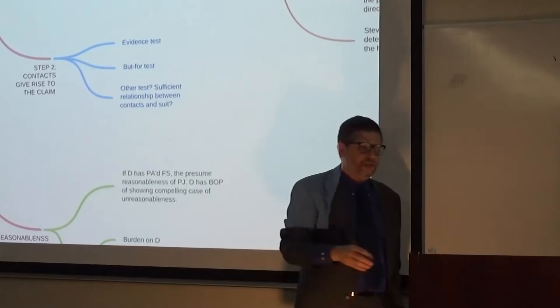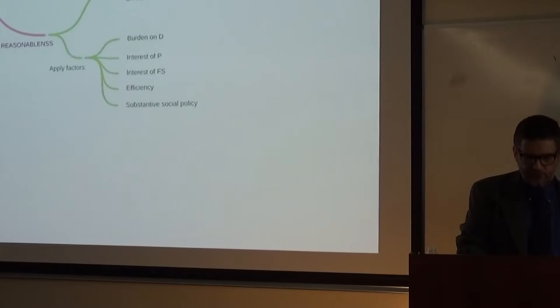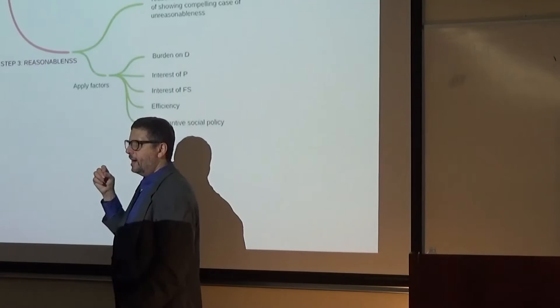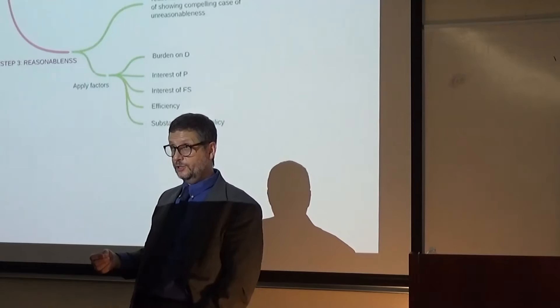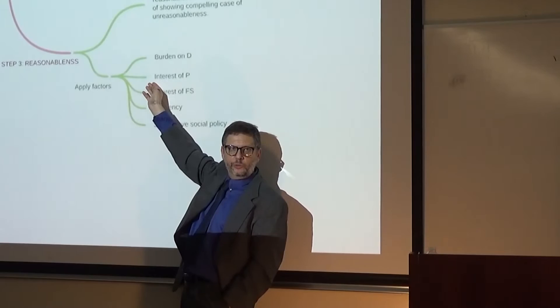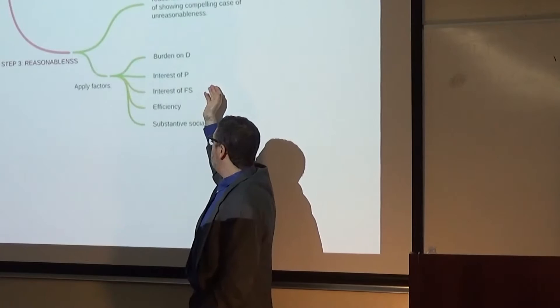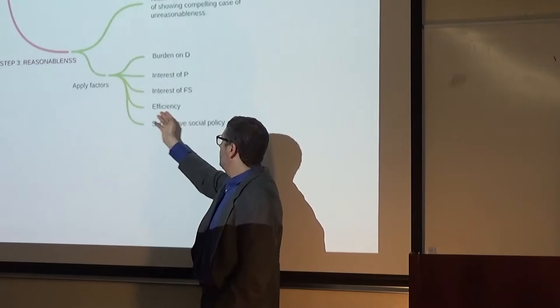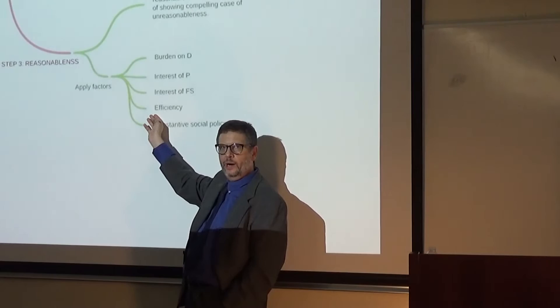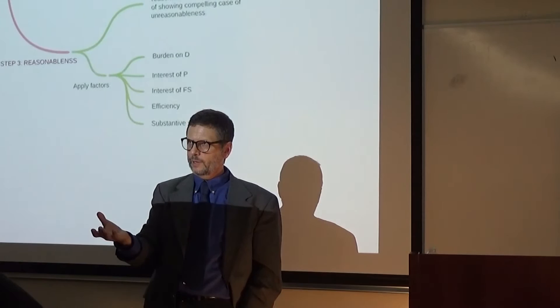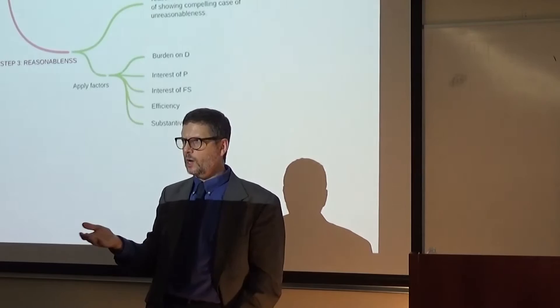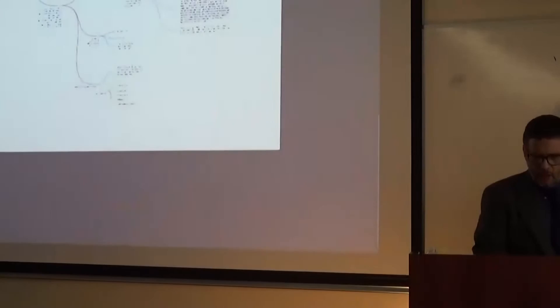Assuming you meet step one and step two, namely purposeful availment and the contacts gave rise to a claim, you go to the reasonableness factors. And first you need to keep in mind that under Burger King once purposeful availment is shown, we presume reasonableness, and the defendant has the burden of showing the compelling case of unreasonableness. It's very hard for the defendant to do this. We look at five factors. How burdensome is it on the defendant to go to the forum state and litigate there? What interest do the plaintiffs have in litigating in the forum state? Does the forum state have interest in having the case heard there? Judicial efficiency. Would it be efficient to have the case in the forum state in light of where the bulk of the witnesses and evidence are? And finally, substantive social policy, which asks, would the social policies underlying the claim mean that this is a good place to have the lawsuit? Do the various states and countries involved believe that this cause of action is one that's worth hearing? So that's specific jurisdiction.